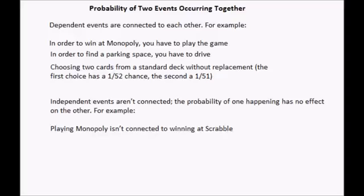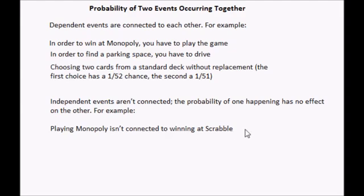They are not connected at all. For example, playing Monopoly isn't connected to winning at Scrabble. Your odds of winning the lottery isn't connected to you winning at Monopoly at all. And finally choosing a card or choosing anything and then choosing something different like choosing from a different deck of cards or rolling a die. They are not connected so they are independent events.